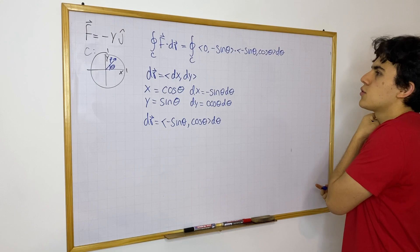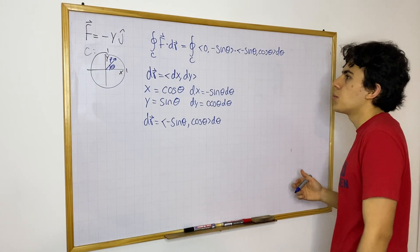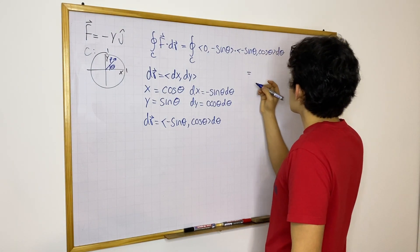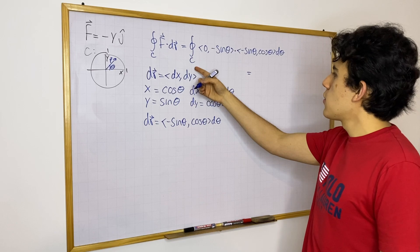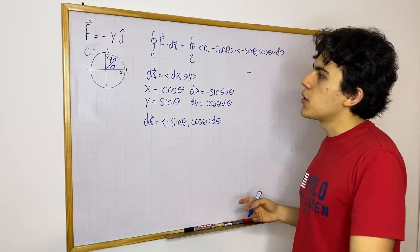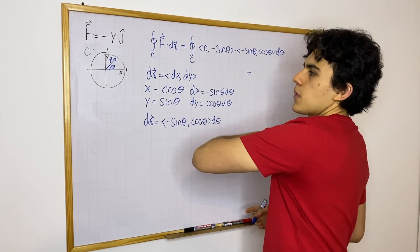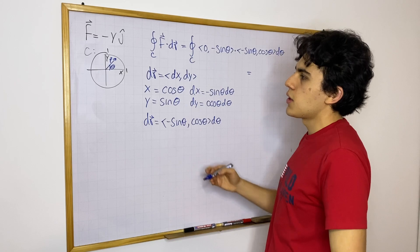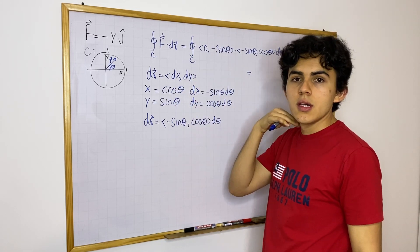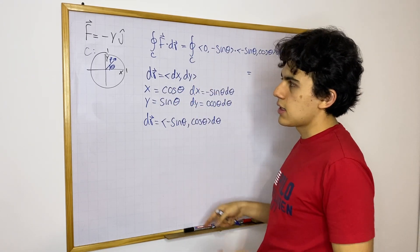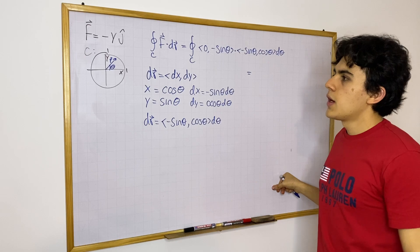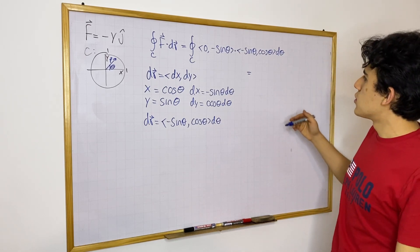And now we just simply need to solve, we can just simply solve this as we would normally solve an integral. So now we need to know what are the bounds for theta. Well, we know it's going to start, let's say, like this, and that is going to be theta equals zero and it's going to end up, well, it's going to sweep around an entire, it's going to make an entire circle. And that is just going to be two pi. So from zero to two pi.